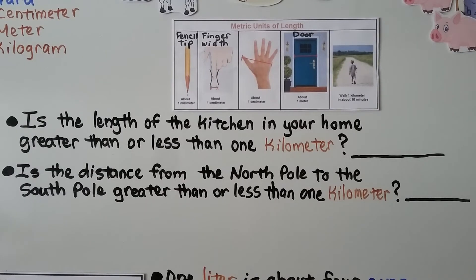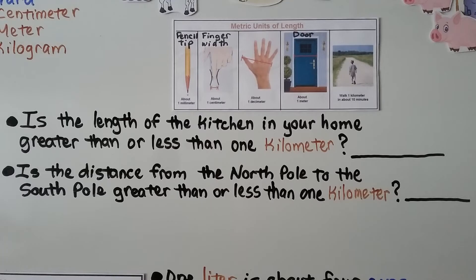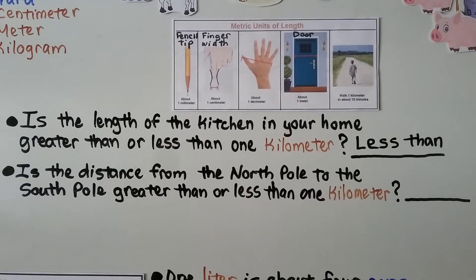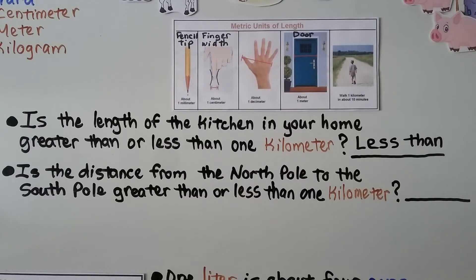Is the length of the kitchen in your home greater than or less than one kilometer? Remember, a kilometer is about how far you can walk in ten minutes. If you said less than, you're right — your kitchen would have to be awfully huge for you to walk ten minutes to get to the other side. Is the distance from the North Pole to the South Pole greater than or less than one kilometer? If you said greater, you're right — it's actually about 20,000 kilometers from the North Pole to the South Pole.